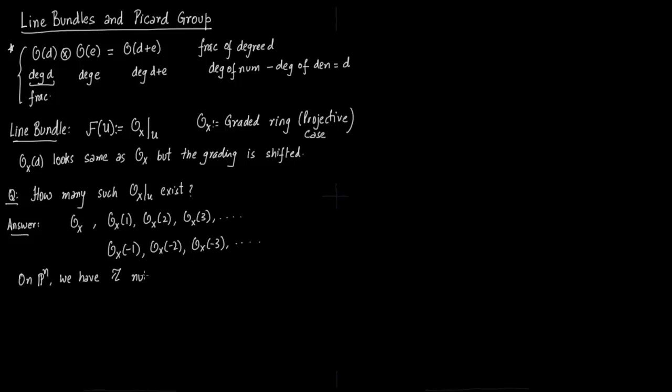On PN all of these corresponding to 0, 1, 2, 3, -1, -2, -3, and so on, all these are different line bundles. And all these line bundles come from shifting.